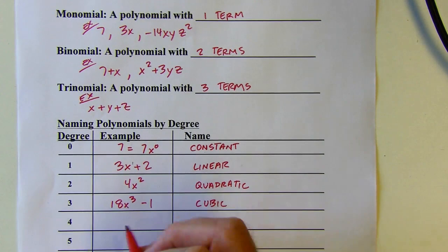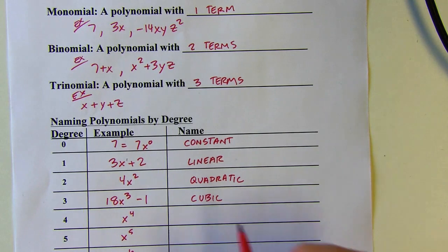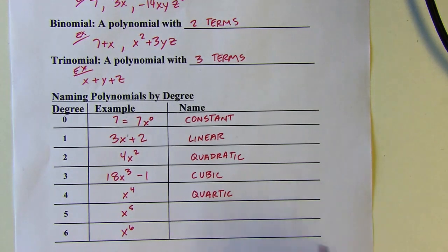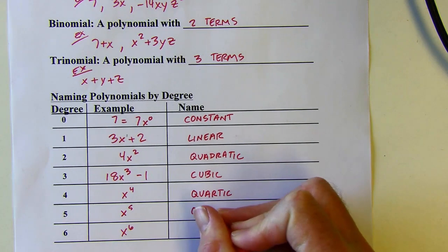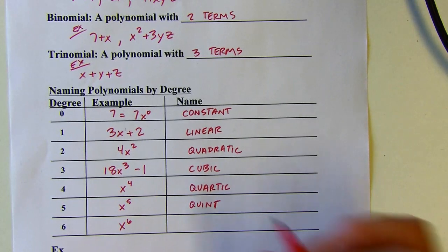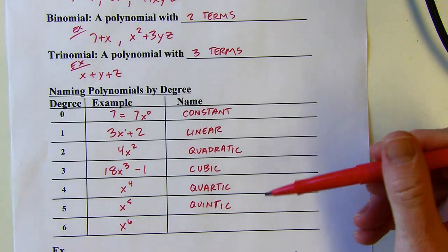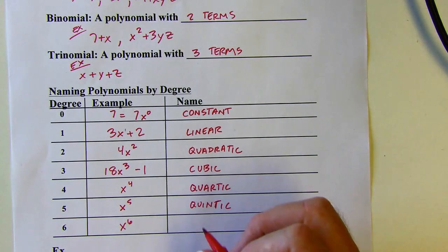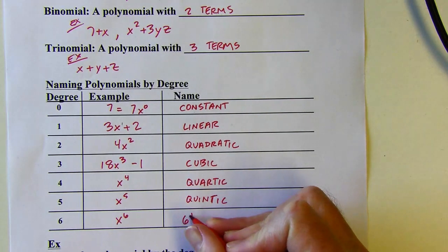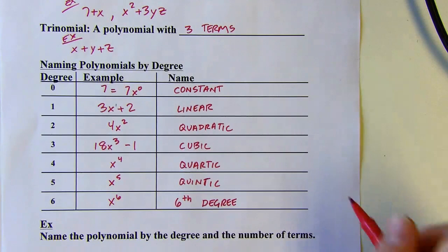Fourth degree is going to be called a quartic polynomial — think of four quarters in a dollar, quartic. And then quintic — think of quintuplets, five siblings born at the same time, they're quints. These are the ones you really need to know. Beyond that, we can just say sixth degree or seventh degree or whatever it is — there are names, but we don't need to memorize all of them. These common ones you'll see in the book and you do need to know what they mean.